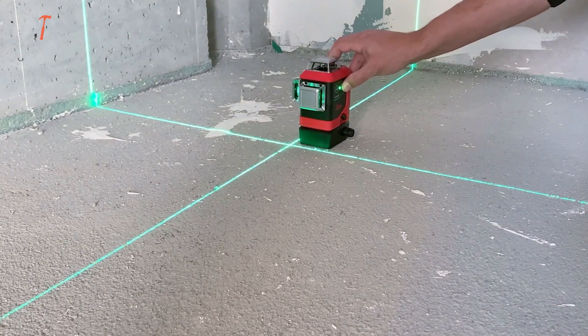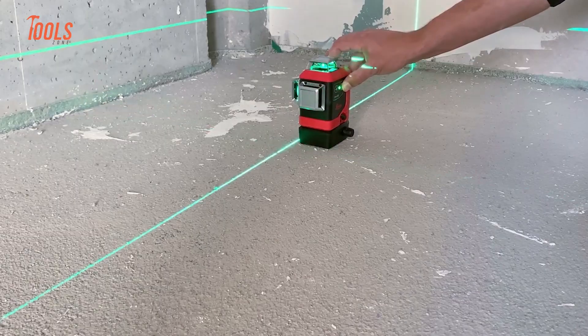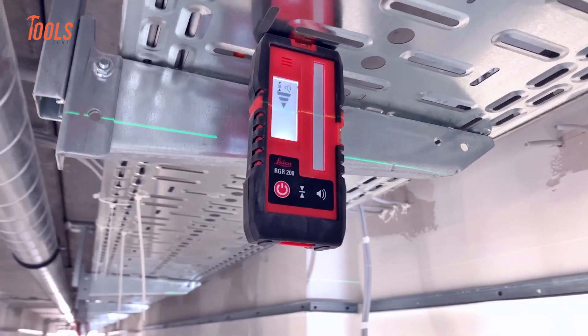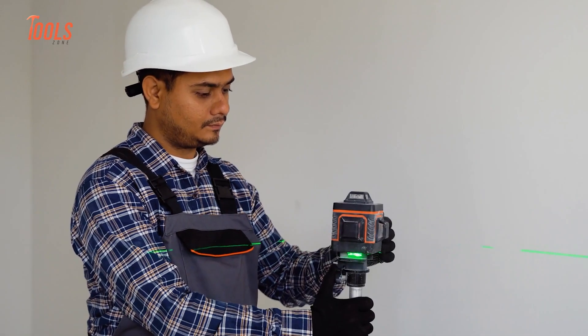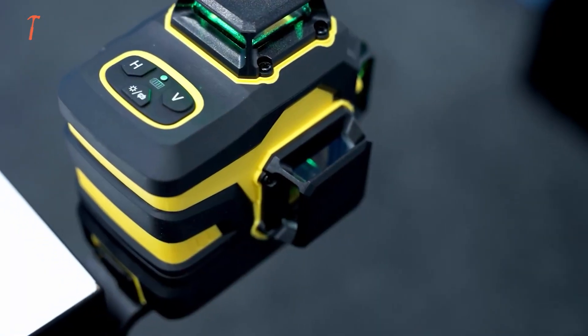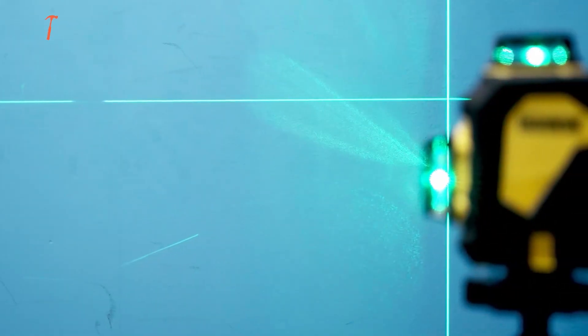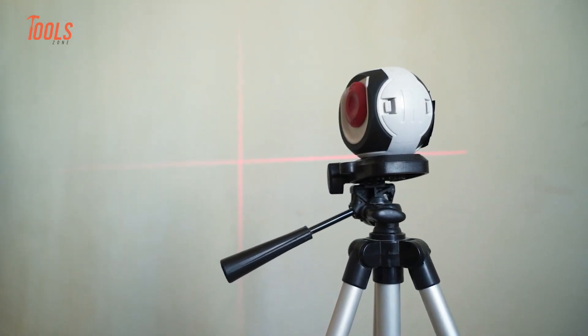Their laser levels are factory calibrated to strict standards to ensure consistent accuracy. They also offer recalibration services, longer warranties, and better customer support. In comparison, many low-cost brands skip such fine-tuning and rely on mass production without strict testing. That's why two cheap laser levels might perform differently, even if they look identical.